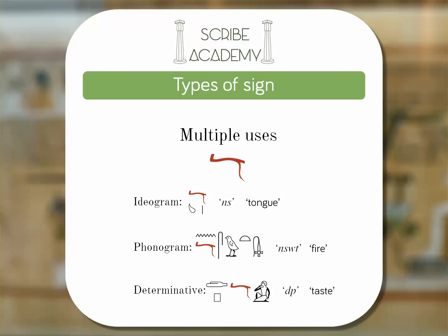This may seem confusing — how do you tell whether a sign is being used as a phonogram, ideogram, or determinative? When a sign was being used as an ideogram, they'd put a short vertical line next to or under it, and determinatives always come at the end of a word. For example, the word 'depth' has two determinatives: the tongue and the man with his hand to his mouth.